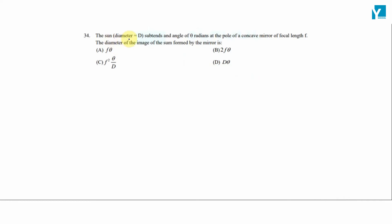The sun's diameter D subtends an angle of theta radians at the pole of a concave mirror of focal length f.